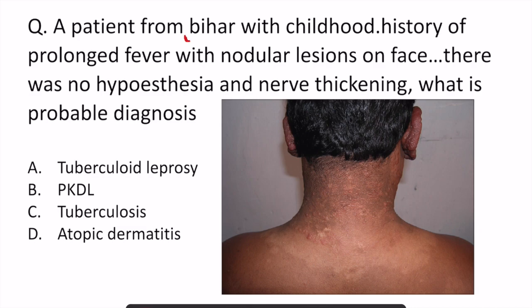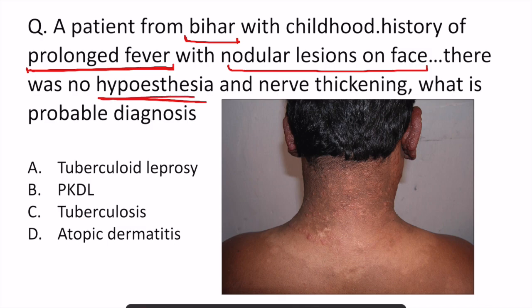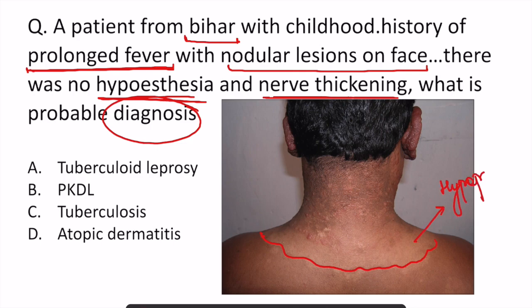In this question, a patient from Bihar with a childhood history of prolonged fever has nodular lesions on the face. These lesions did not have any hypoesthesia — there was no sensory loss and no nerve thickening. In the image, you can see hypopigmented lesions, a few nodular lesions, and ear lobe involvement is also present.